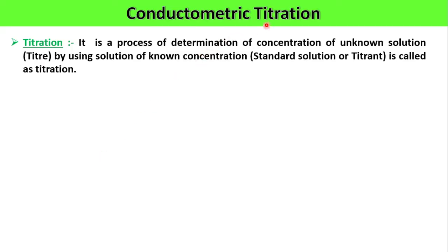The word titration means — we have seen this in our volumetric analysis chapter — titration is a process of determination of concentration of an unknown solution by using a solution of known concentration. This known concentration solution is also called as standard solution, and when we use this standard solution in the titration process, it is called as titrant.